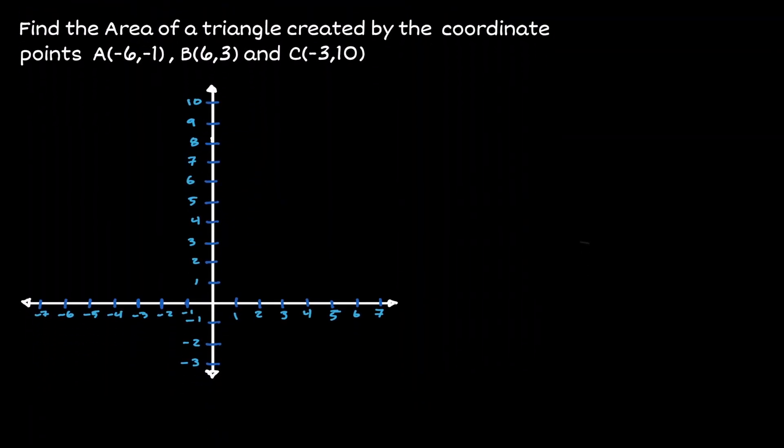For this example, let's consider a triangle where the coordinate points are located at A(-6, -1), B(6, 3), and C(-3, 10).